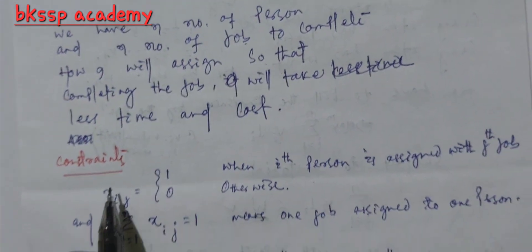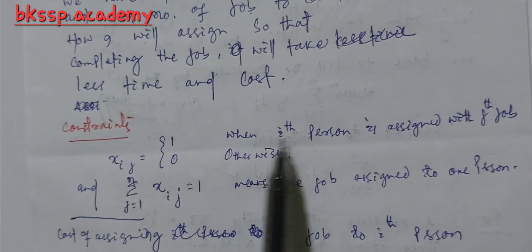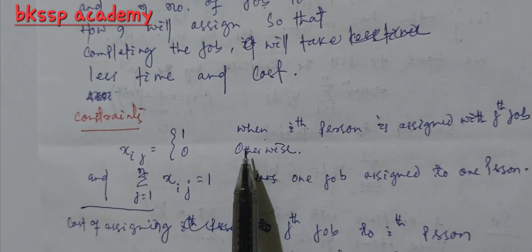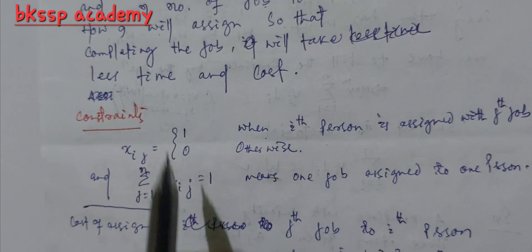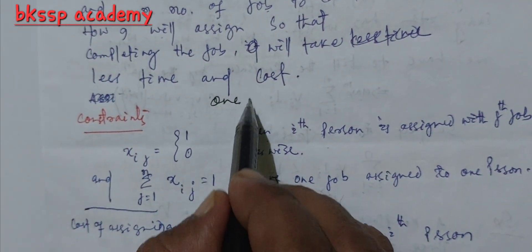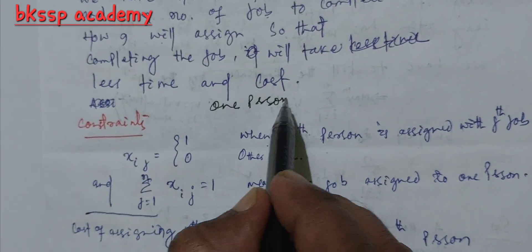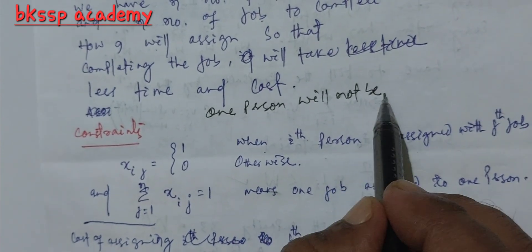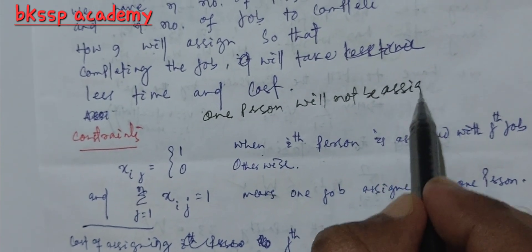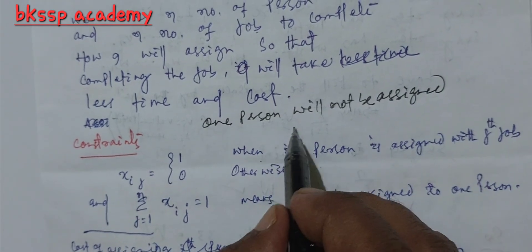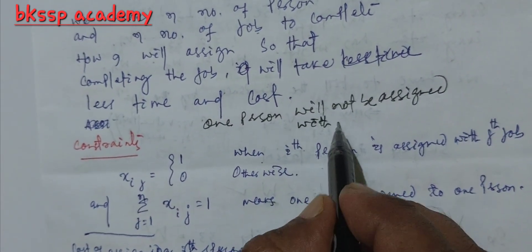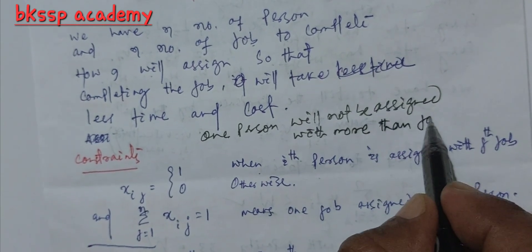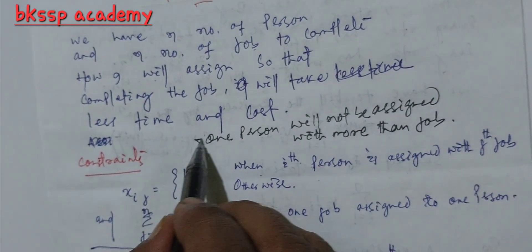Suppose the constraint is here: when the ith person is assigned the jth job, this is the constraint where one person will not be assigned with more than one job. This is the constraint.